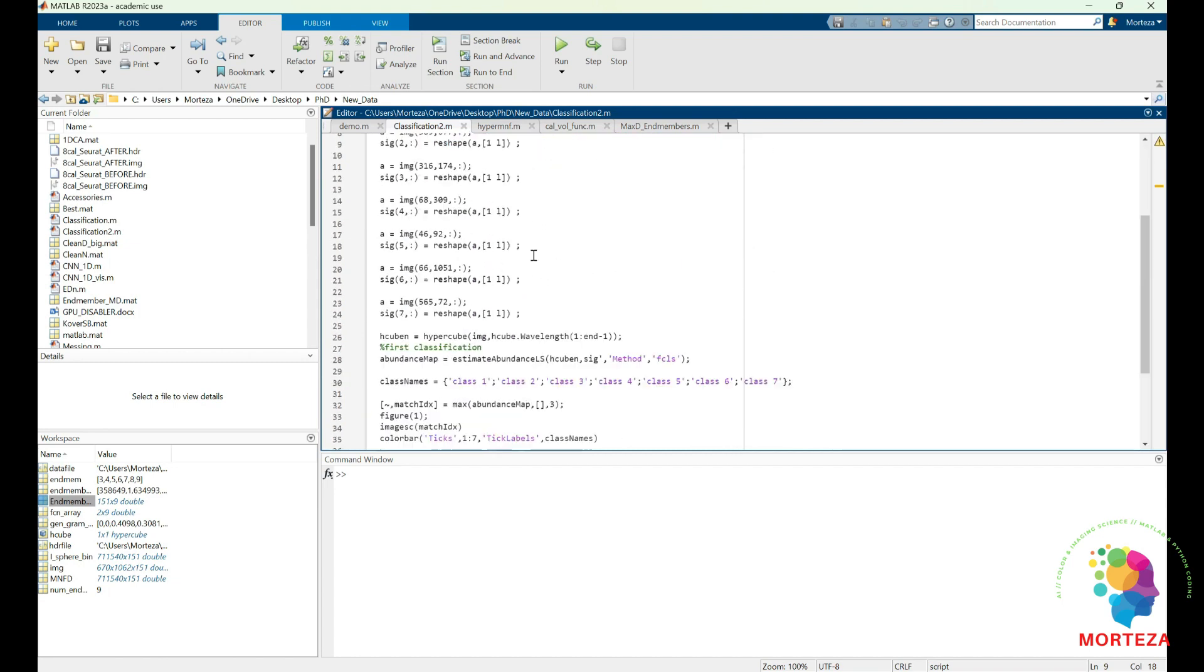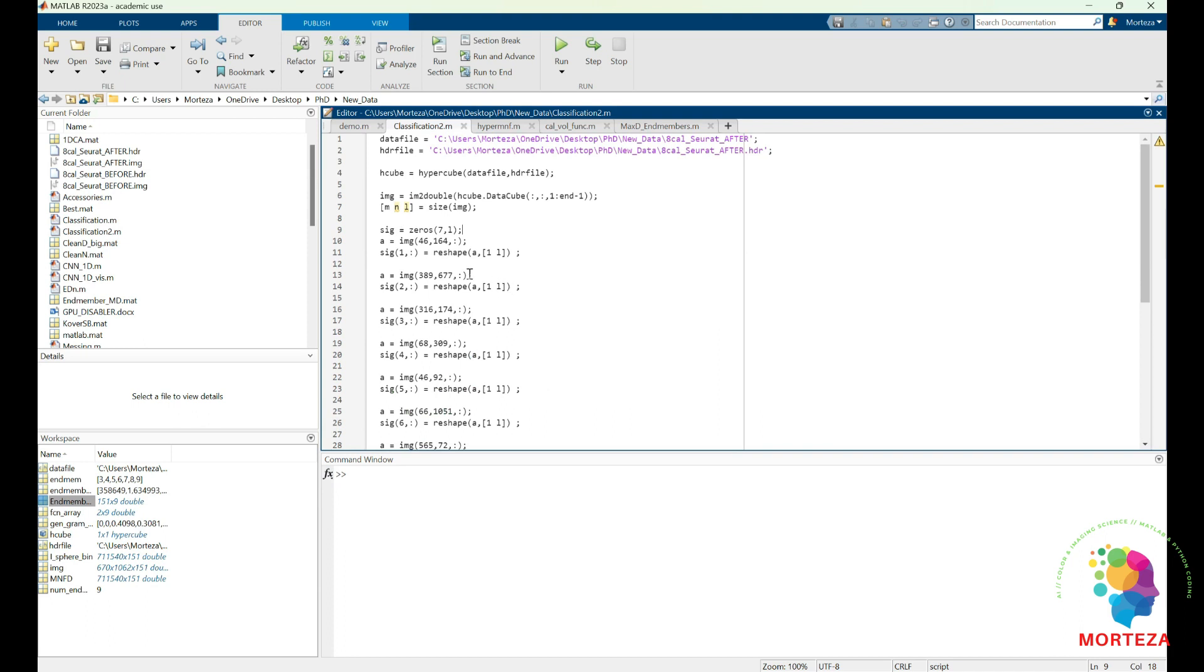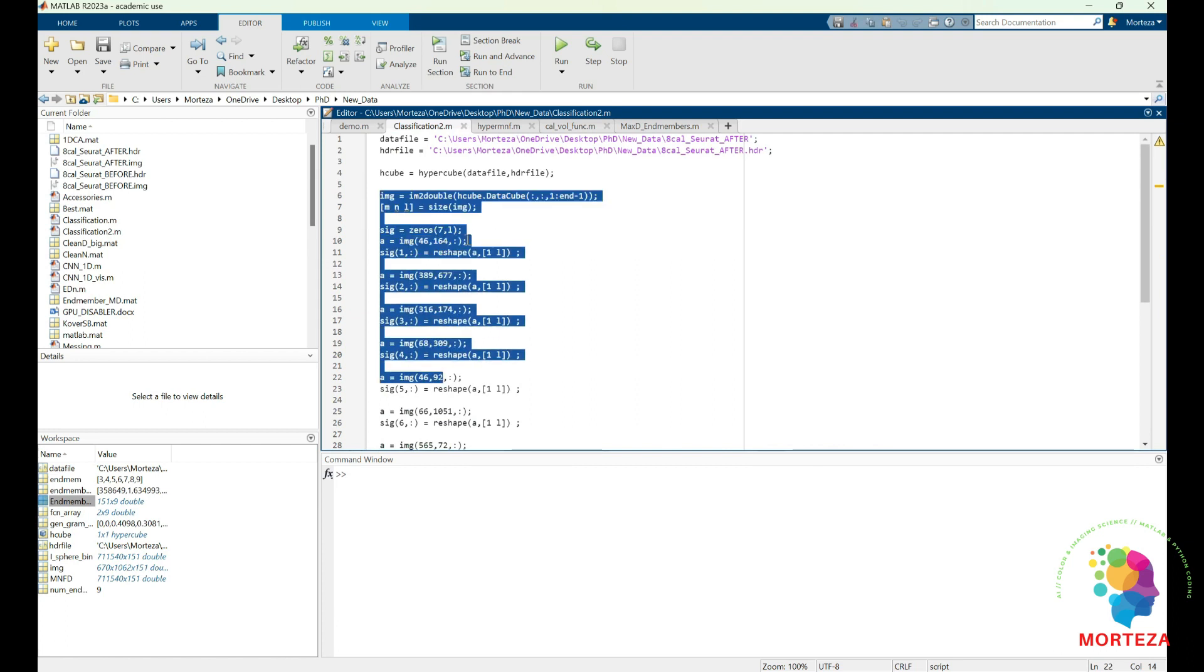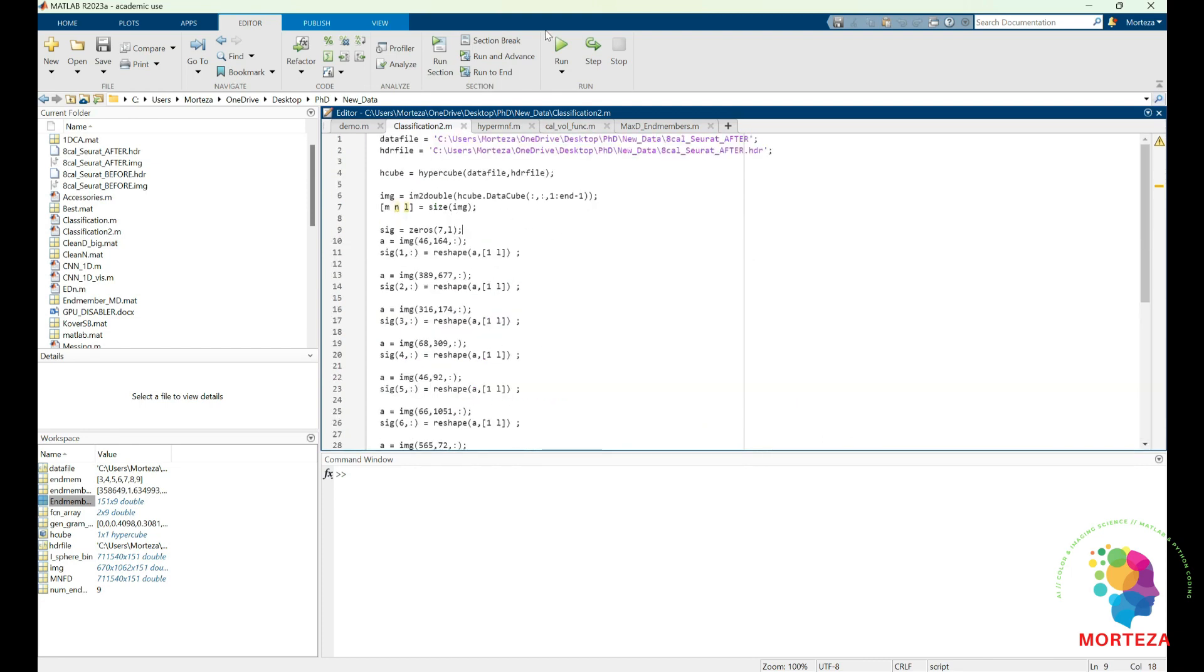I'm going to use two methods. One of them is based on maximum distance, and the other one is the one that I chose endmembers visually. I have already talked about this in one of the former videos in which I chose the endmembers visually, and I'm going to compare it with maximum distance. Let's run it and see what happens.